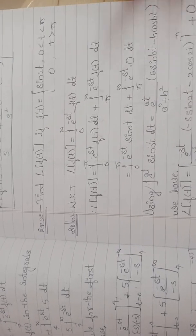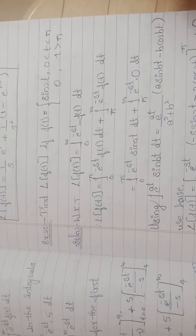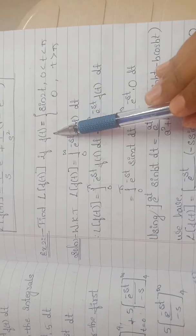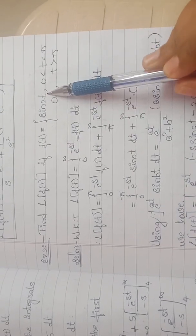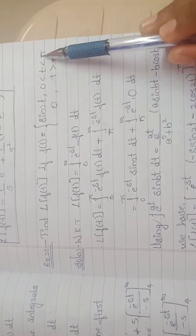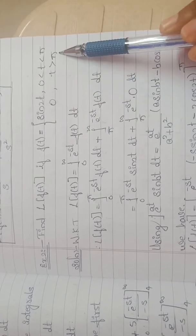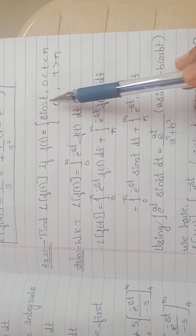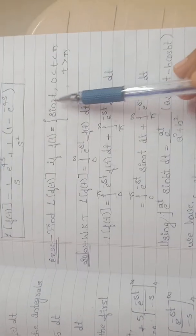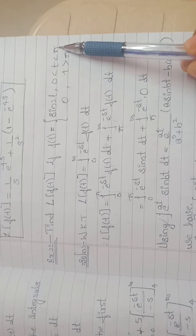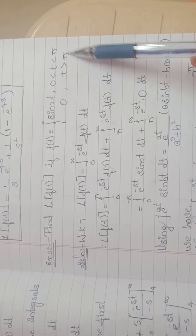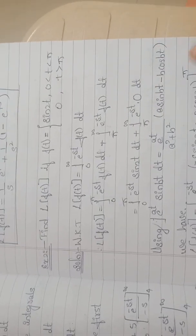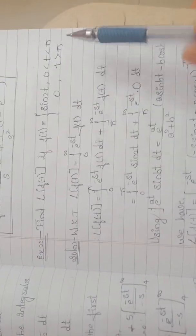In this video we will discuss the second example to find L of f(t). The question is: find L of f(t) if f(t) is equal to sin(2t) when t lies between 0 and pi, and 0 when t is greater than pi. Here f(t) is composed of two different functions: sin(2t) for t between 0 and pi, and 0 for t between pi and infinity.